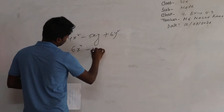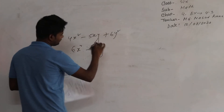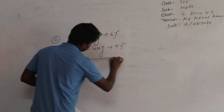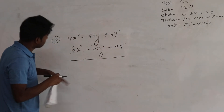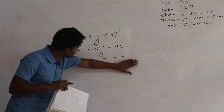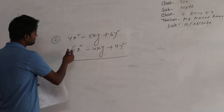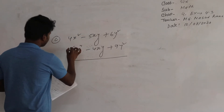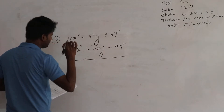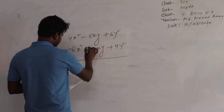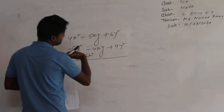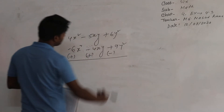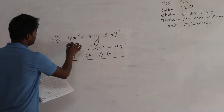Question C: we perform the subtraction of expression 2 from expression 1. That is: (4X² minus 5XY plus 6Y²) minus (minus 6X² minus 4XY plus 9Y²). At first, we will change the signs — minus becomes plus.